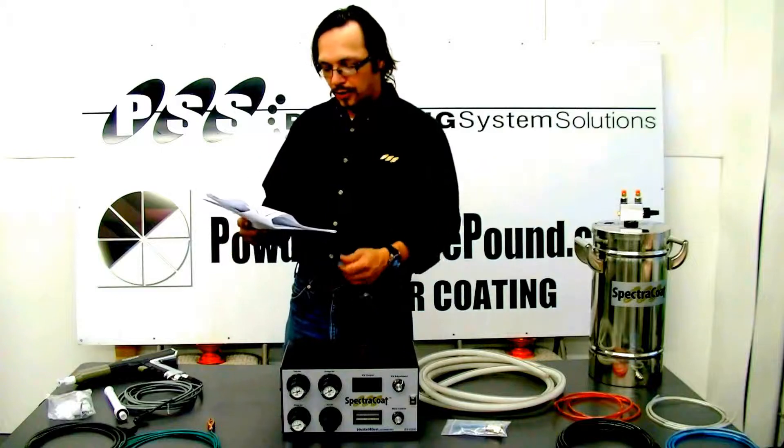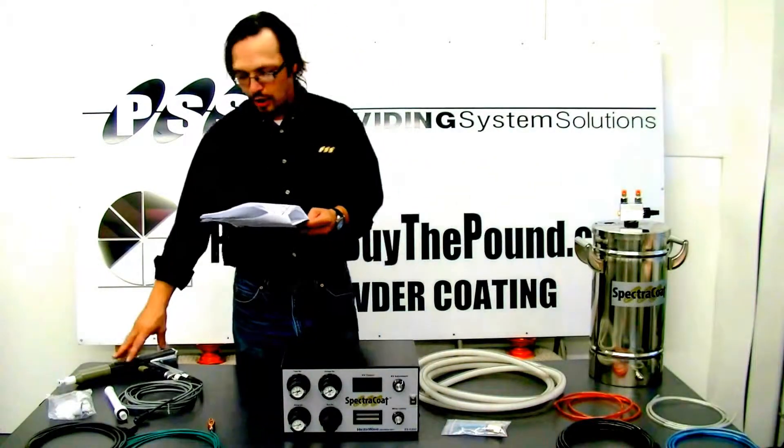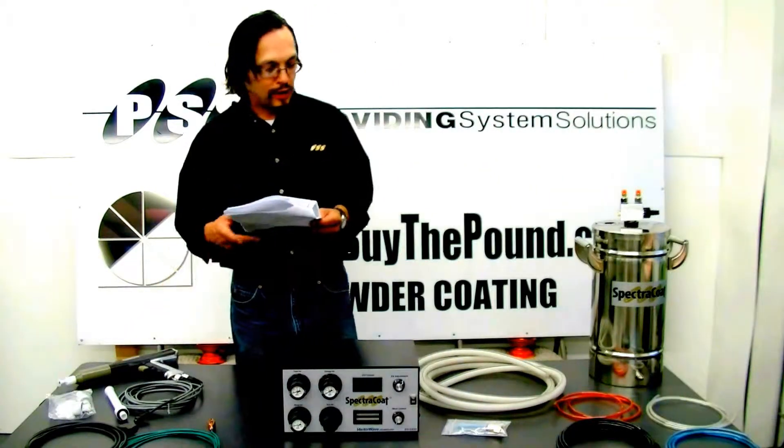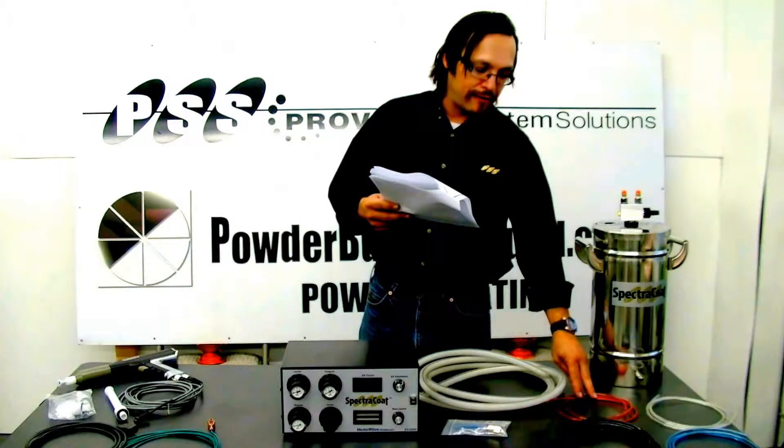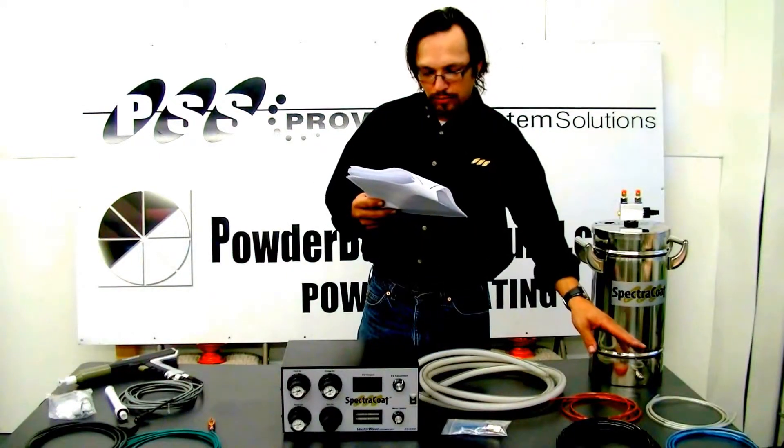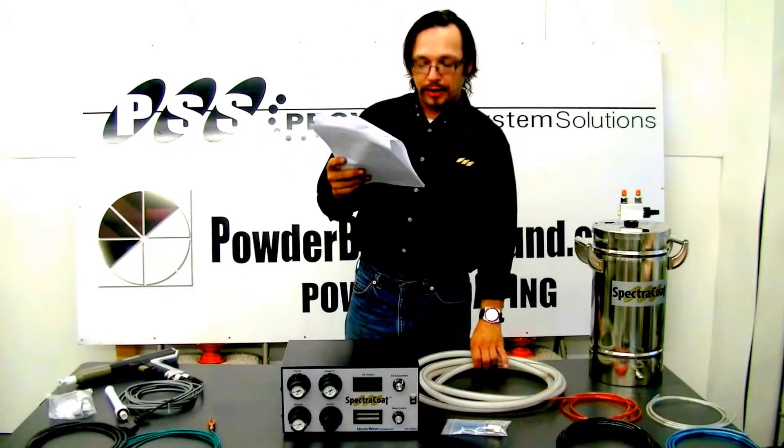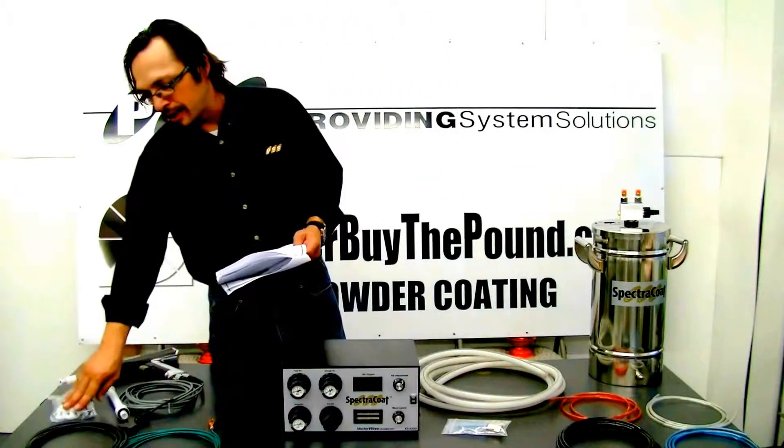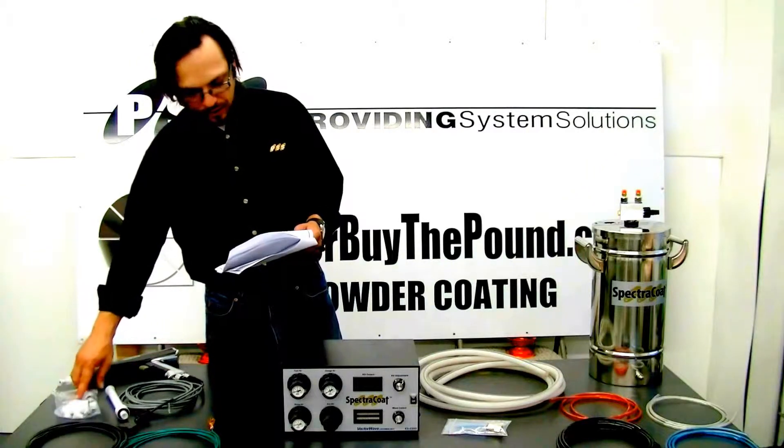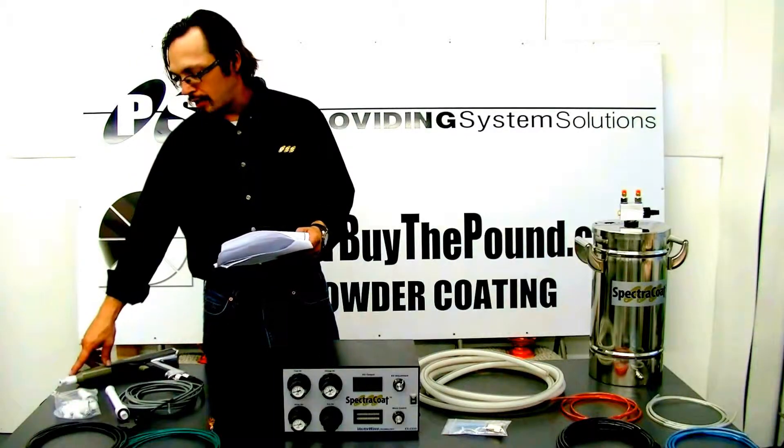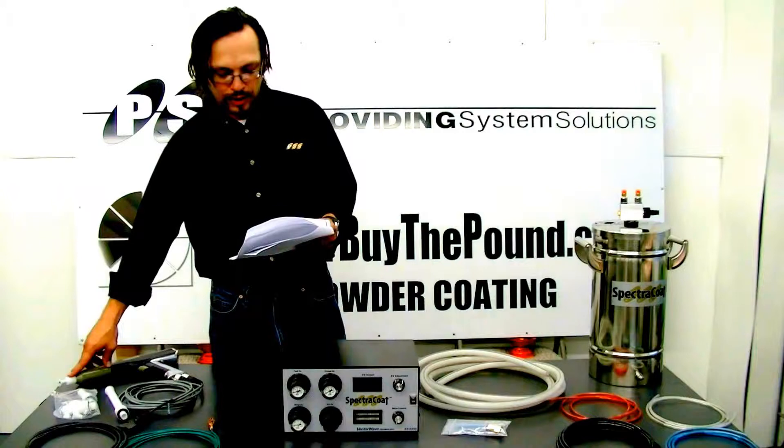We have our ESO3 control box, our SpectraCoat spray gun, we have three five foot hoses, one red, one clear, and one blue. We have a grounded powder feed hose, we have a fan tip electrode in our extra bag along with extra conical nozzles. We have our conical tip on our gun as well here.